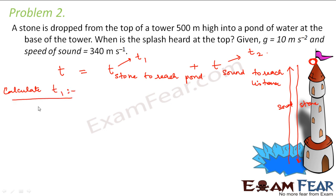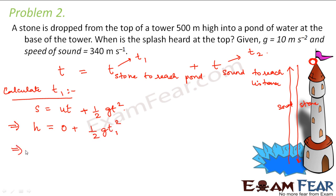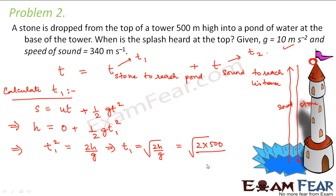To calculate t1, we use Newton's second equation of motion: s = ut + ½gt². Since the stone is falling down, we use plus g. Here s is the height of the tower h, and the initial velocity u is 0. So h = ½g·t1², therefore t1² = 2h/g, and t1 = √(2h/g) = √(2 × 500 / 10) = √100 = 10 seconds. So the stone takes 10 seconds to reach the pond.